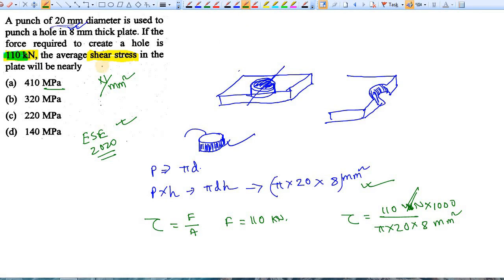By the way, in this particular examination you are not allowed to use a calculator for solving this type of problem, especially in this objective question paper. So let's try to calculate by hand. Your stress is 110,000 divided by π - let's say 3.1 - so 3.1 times 20 times 8.